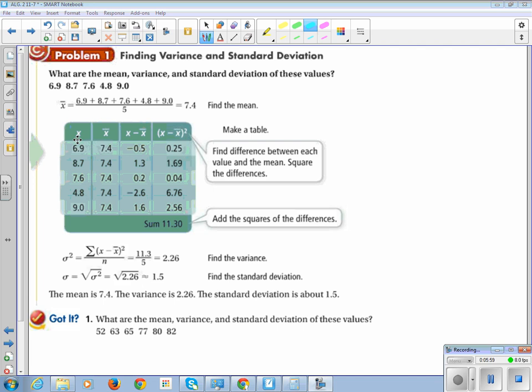Now we're going to make a little table. We're going to list our data values, list the mean, and then subtract the two: data value minus the mean. So we subtract all of them. And then this guy is the variance. Remember, when we subtract, the subtracted item squared is the variance. So when we square it, we get 0.25, 1.69, 0.04, 6.76, and 2.56.